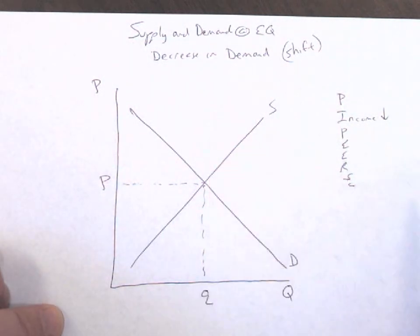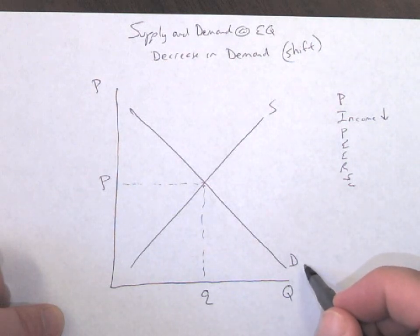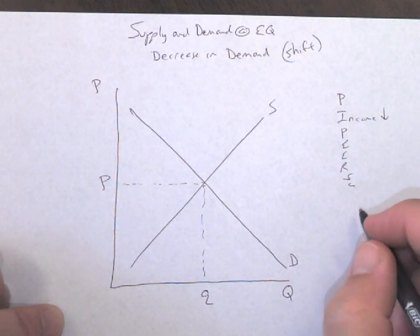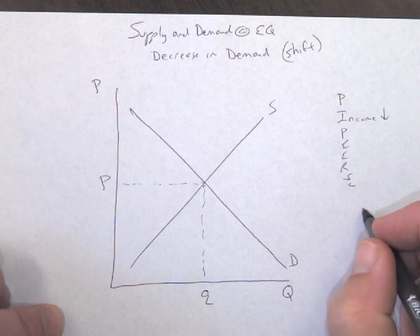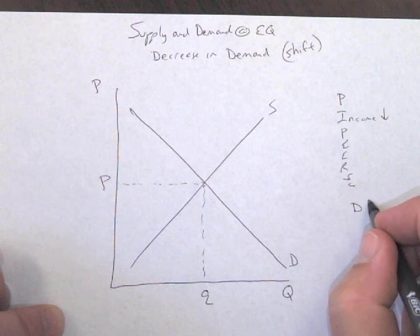So that would create a decrease in consumption, which is demand, which is part of SIGX. So we're looking at the people, the buyers right here. So now we know our income decreases, we just can't buy as much. So demand is going to decrease.